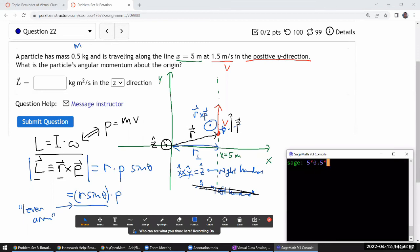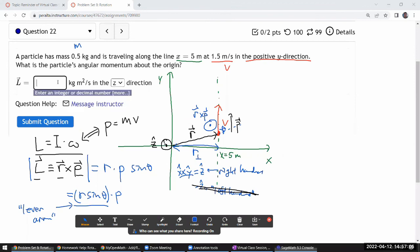And my momentum should be MV. Mass, 0.5 kilogram times V, 1.5 meter per second. And they're all basic SI units. So multiplying these should give me answer in basic SI units. So 3.75. That's it.